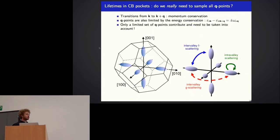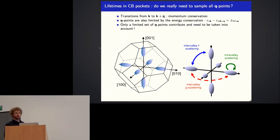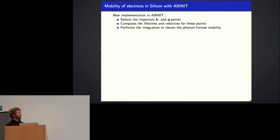For the Q points, energy and momentum conservation also greatly reduces the number of Q points needed. For an electron in one pocket, we only need Q points for transitions that keep the electron in that pocket — small Q vectors — and transitions to another pocket — large Q vectors. We don't need Q vectors in between. The new implementation in Abinit automatically selects the important K points for the mobility and, for each of these K points, the important Q points for the lifetimes.